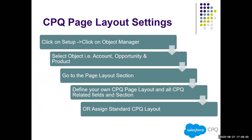To update CPQ page layouts, go to Setup, open Object Manager, open the Account, Opportunity, and Product objects, go to the Page Layout section, define your own CPQ page layout, enable all CPQ-related fields and sections, and assign them to admin or end users. After installation, Salesforce CPQ also provides standard CPQ layouts — you can assign those to yourself as admin to test functionality without modifying existing layouts.